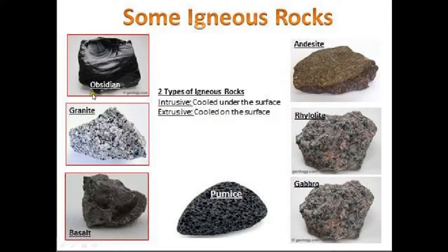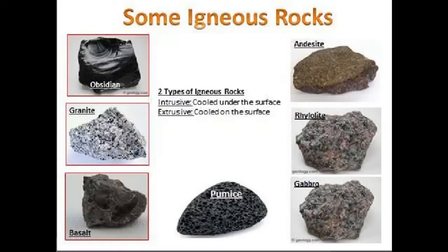We can also see some examples of igneous rocks. Obsidian is one kind of igneous rock. Here we also see granite, basalt, pumice, and gabbro — these are some of the different kinds of igneous rocks.